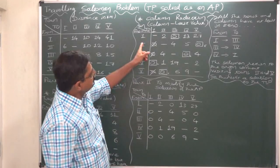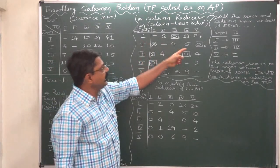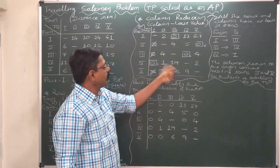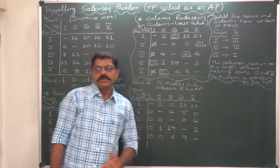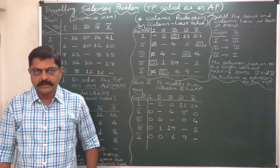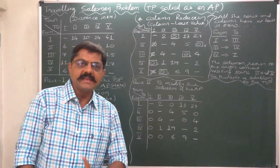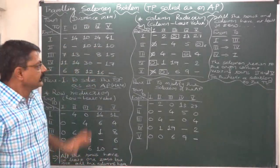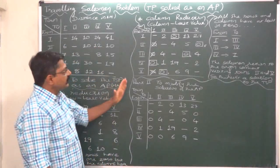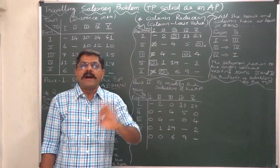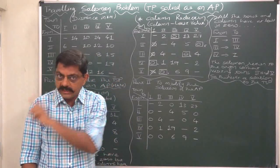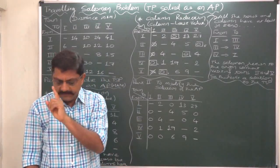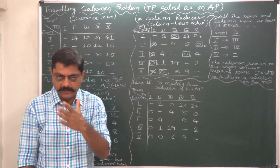We can see that in each and every row as well as column there is only one assignment. So we can say that this is the optimal solution of our assignment problem — not the Traveling Salesman Problem.